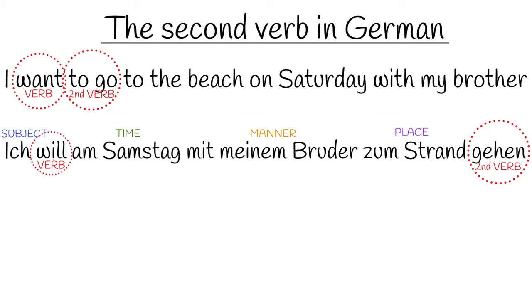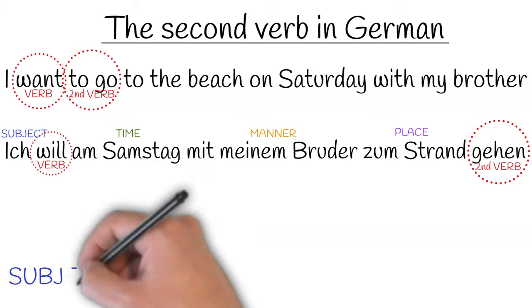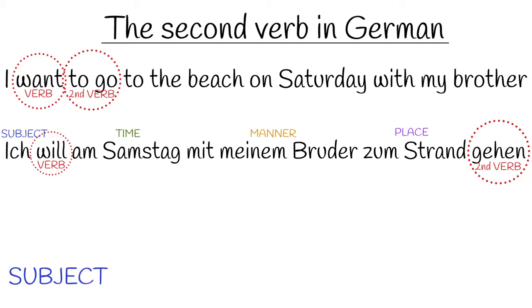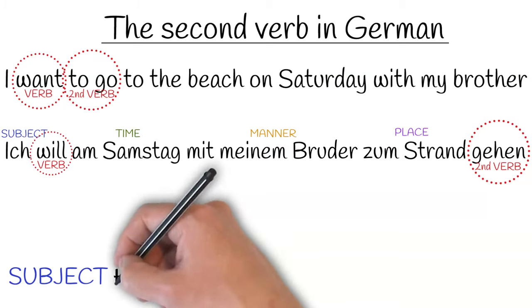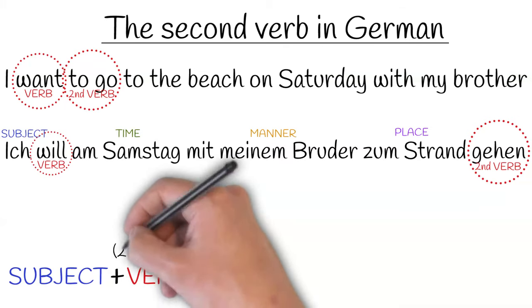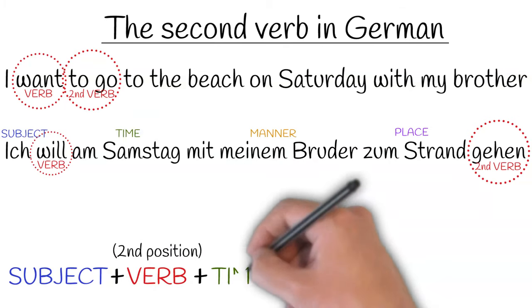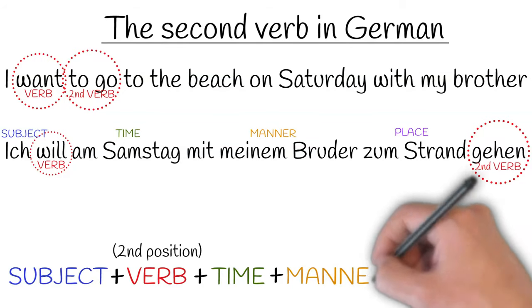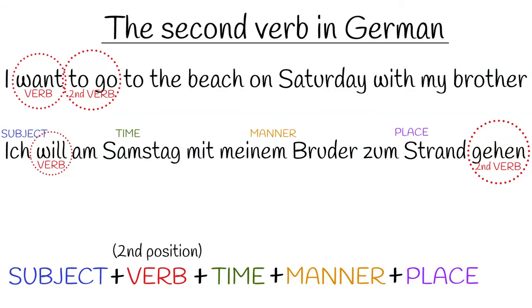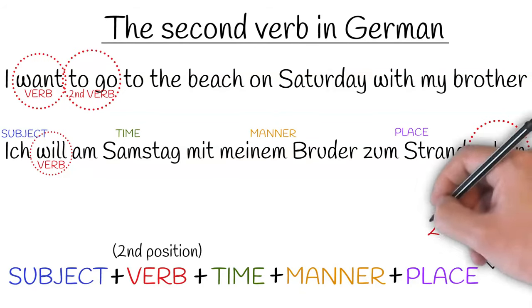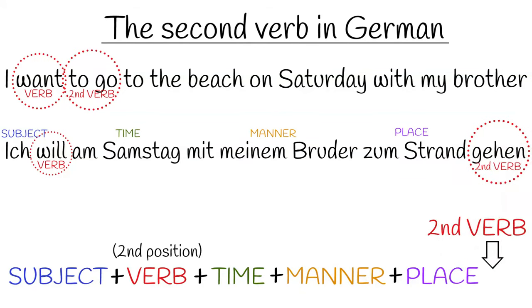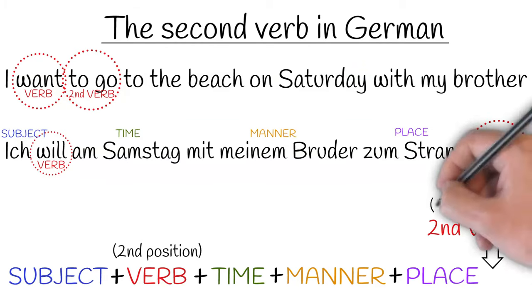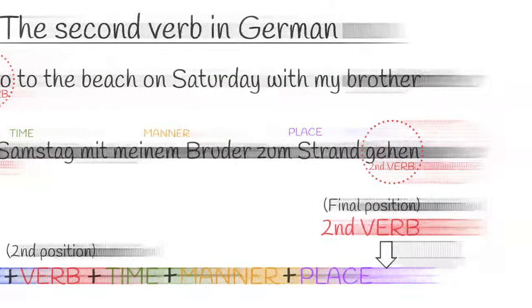So how do we summarize this pattern? We have the subject, then the first verb in second position, then the time, then the manner, then the place, and finally, if there is a second verb, it comes in the final position.